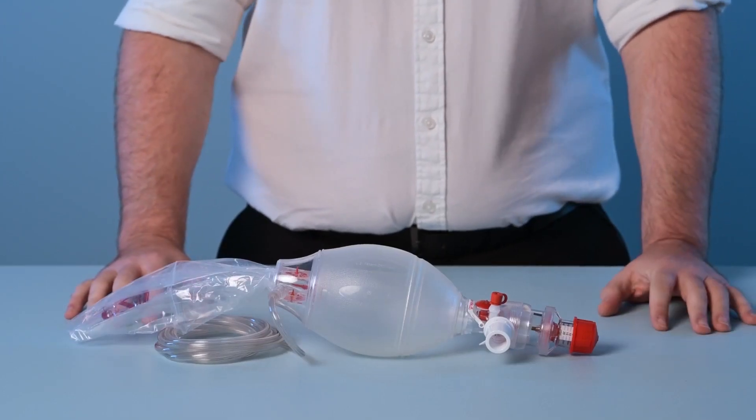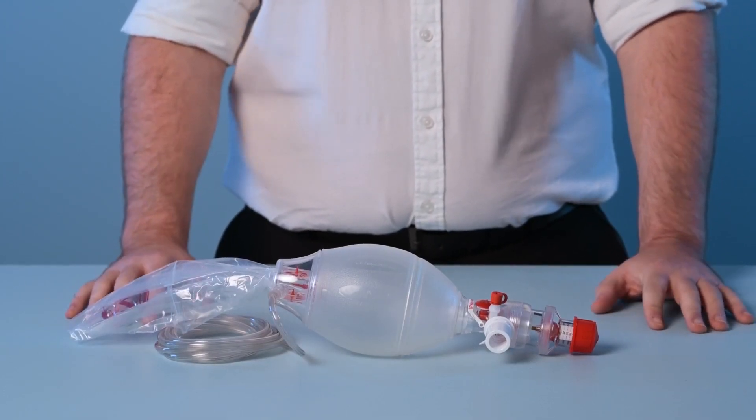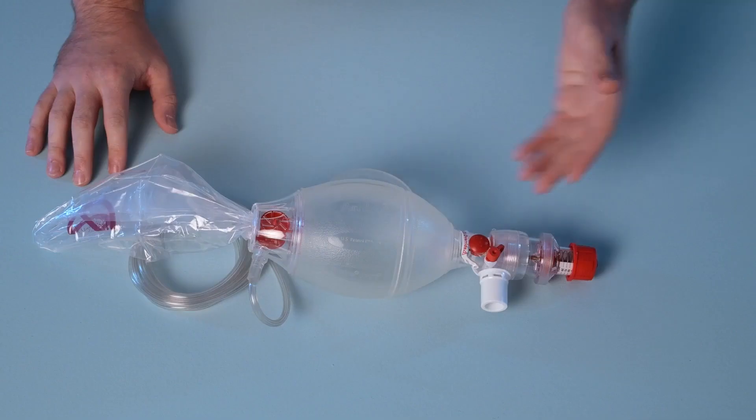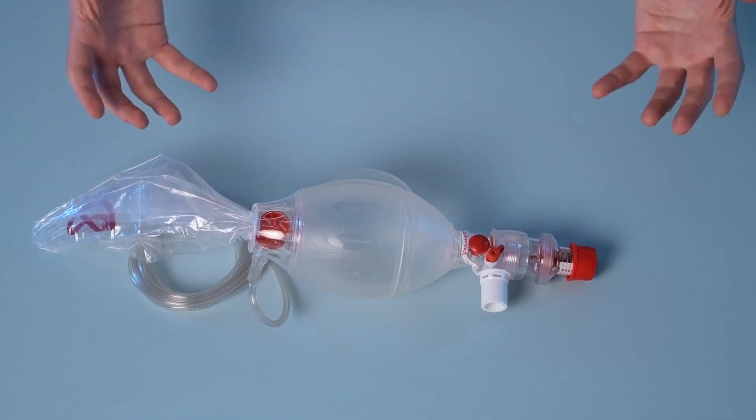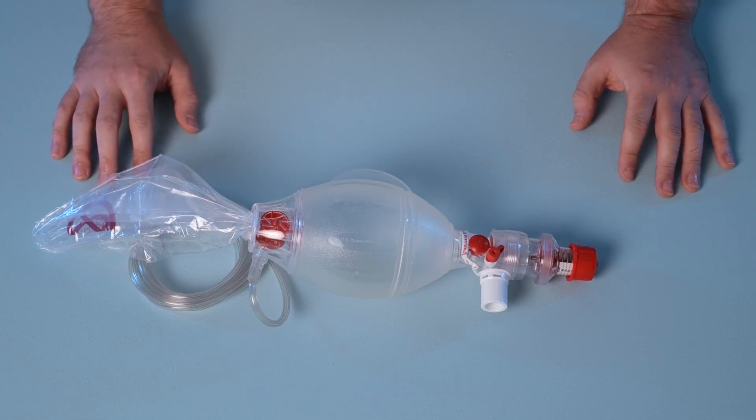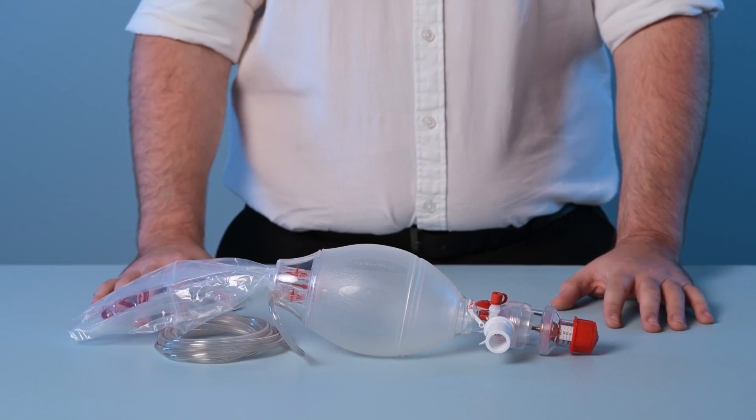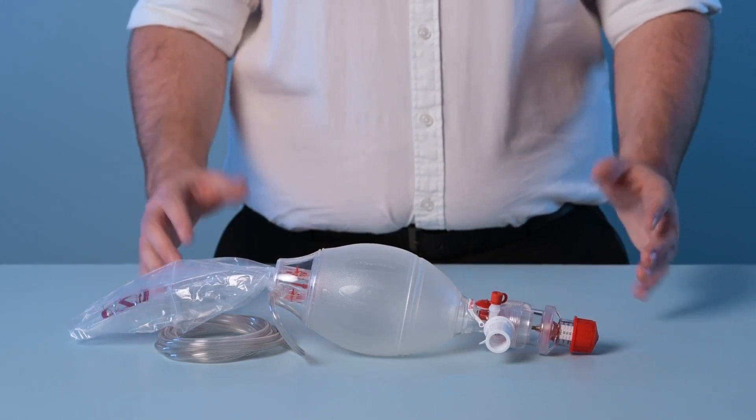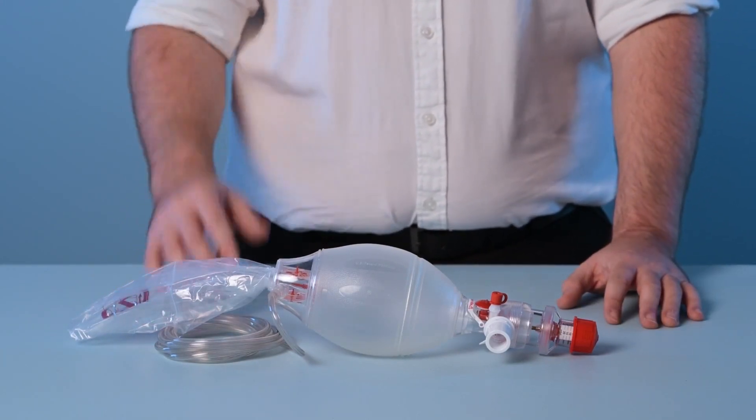Each Spur2 device comes equipped with a pressure limiting valve system, also known as a pop-off valve. The purpose of this valve system is to prevent the delivery of excessive pressures to the patient. Higher than suitable pressures have the potential to cause barotrauma which is hazardous and must always be avoided.